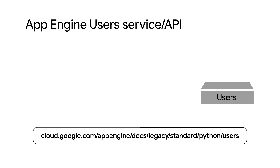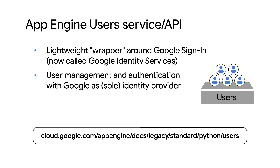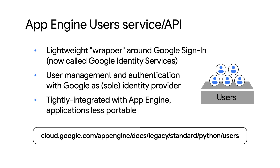I am happy to be here as always, Wes. So what's today's migration about? Well, the App Engine user service provides a lightweight and easy-to-use Google sign-in service, meaning user authentication backed by Google as the identity provider. However, to make your App Engine apps more portable, we recommend moving away from App Engine-only services like the Users API. That said, this video won't feature any migrating at all.